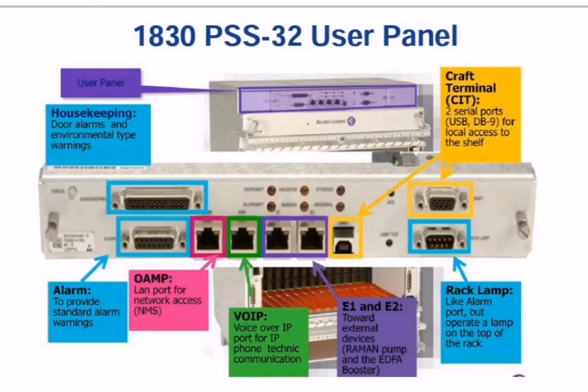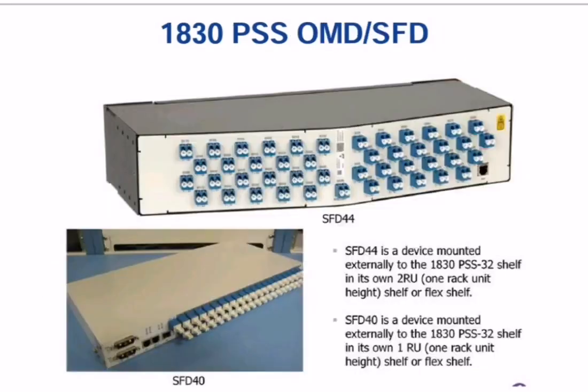The next one is used for a ramp lamp, like an alarm port but it operates a lamp on the top of the rack. The next ones are two serial ports — like a USB port and a DB9 — which are used for the shelf.